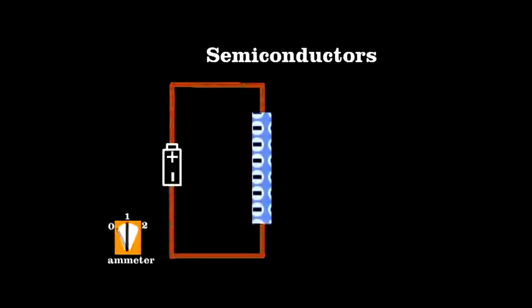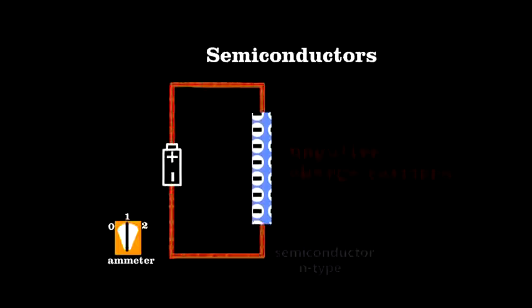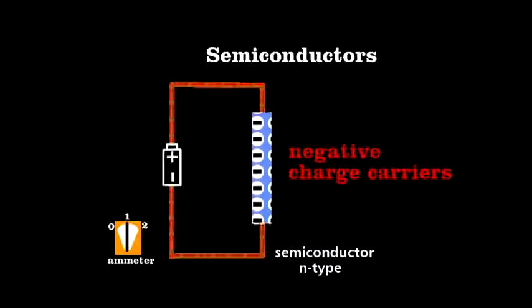As the name implies, they conduct better than insulators, but not as well as conductors. But more importantly, unlike metals, semiconductors have two different ways to conduct electricity—effectively negative and positive charge carriers. That property lies at the heart of a transistor.